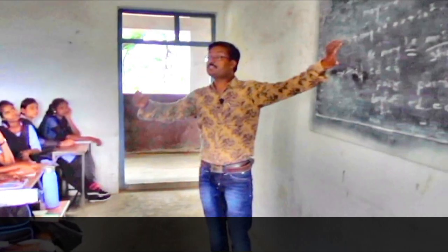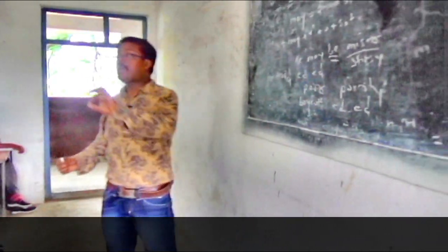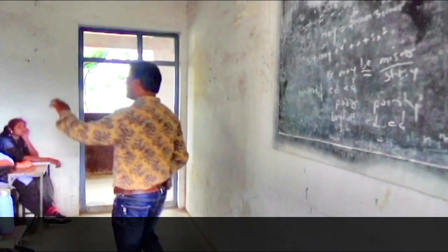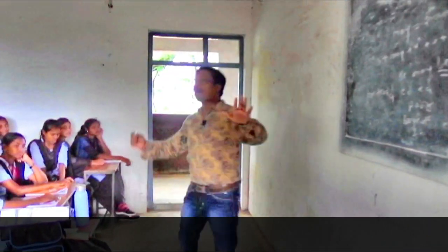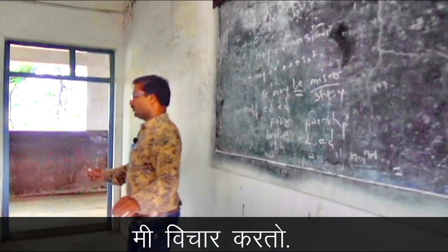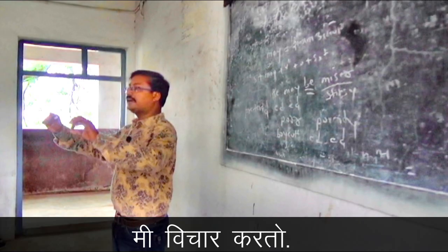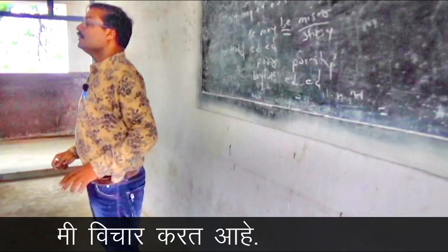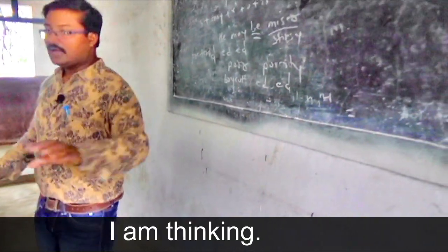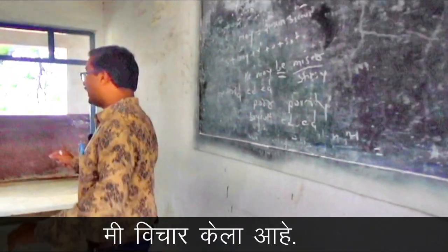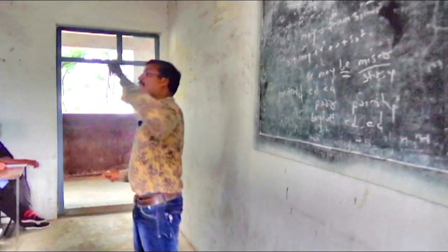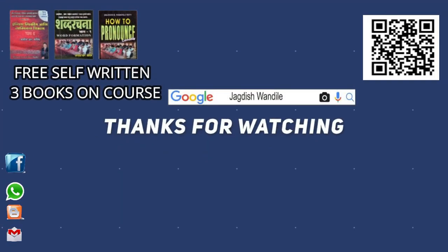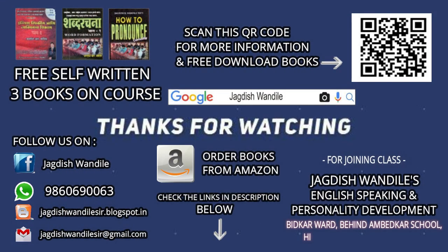There are around 30 to 38 formats. Once you learn them perfectly, I am damn sure you can speak nice English. 'Mi vichar karto' — karto means simple present tense action — I think. 'Mi vichar karta hai' — I am thinking — present continuous. 'Mi vichar kela hai' — I have thought — present perfect. Think, thought, thought — second form: thought, third form: thought.